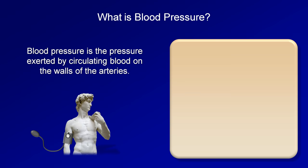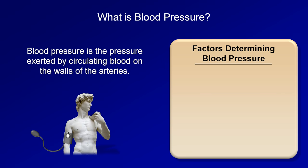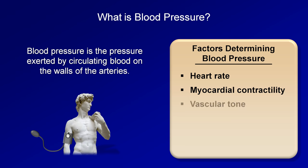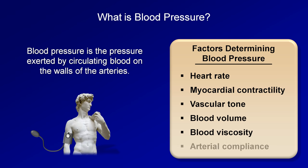The physics of blood pressure is remarkably complex, but the basic factors which determine it include the heart rate, myocardial contractility — which refers to how hard the heart is squeezing — vascular tone — which refers to how much the arteries are constricted or relaxed — blood volume, blood viscosity, and arterial compliance, which refers to how much give or elasticity the arteries have.